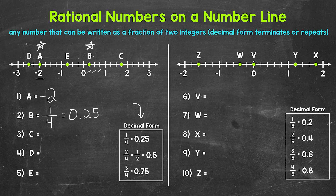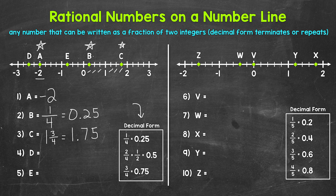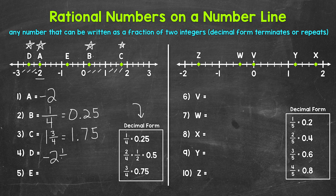Moving on to number three, we have point C, which is between one and two. We have one and one fourth, one and a half, and then one and three fourths. So point C is at one and three fourths, which as a decimal is 1.75. Next we have point D, between negative two and negative three — at negative two and one fourth, negative two and a half, and then negative two and three fourths. So point D is at negative two and a half, which in decimal form is negative 2.5.